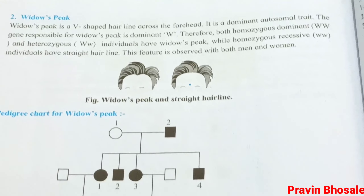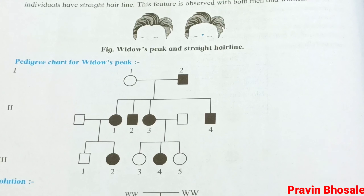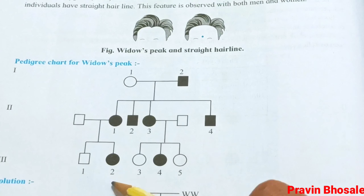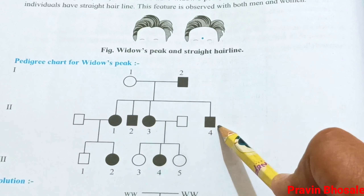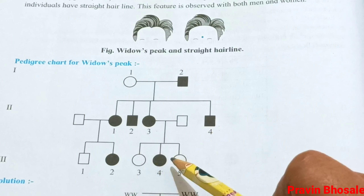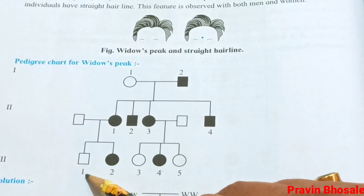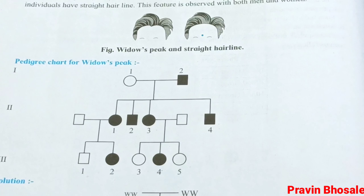Now let's see the pedigree chart for widow's peak. Total there are nine progeny. Out of nine, six are affected and three are normal. There is no carrier progeny. The linkage is autosomal.